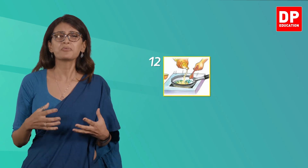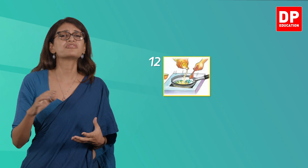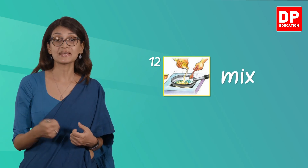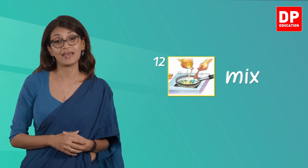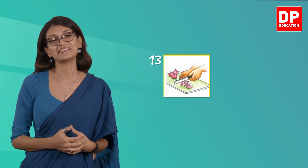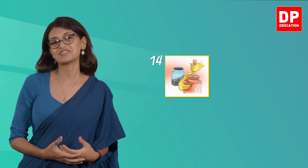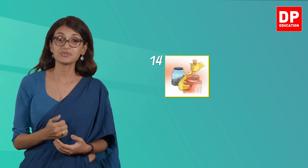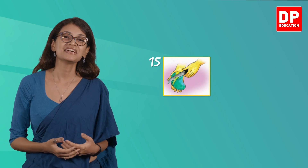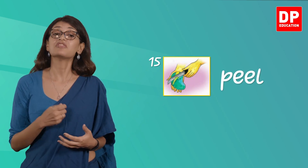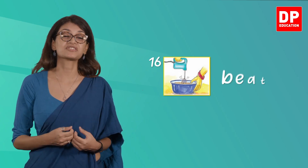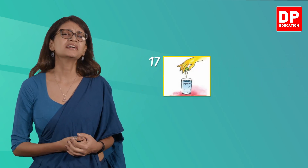Picture twelve shows some sauce being mixed into food already being fried in the pan — this action is 'mix.' Picture thirteen shows someone cutting up onions; the verb to describe this is 'chop.' Picture fourteen shows a mortar and pestle — the action is 'pound.' In picture fifteen, a mango is being peeled, so the verb is 'peel.' Picture sixteen shows an electric mixer being used to beat eggs — the verb is 'beat.' In picture seventeen, a lime is being squeezed — the verb is 'squeeze.'